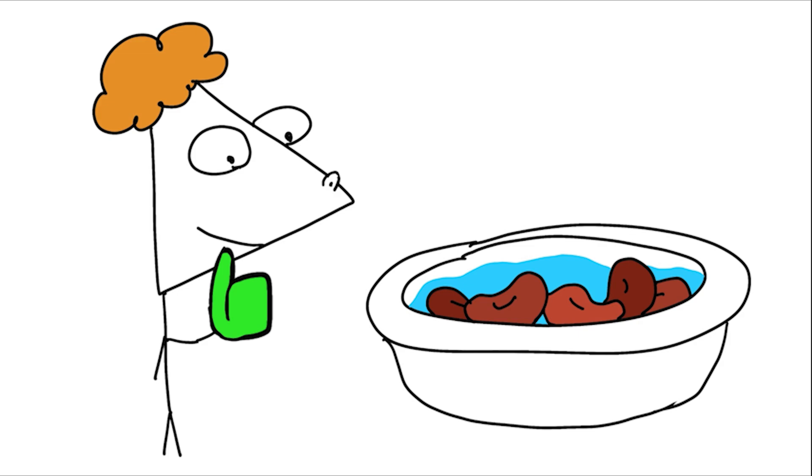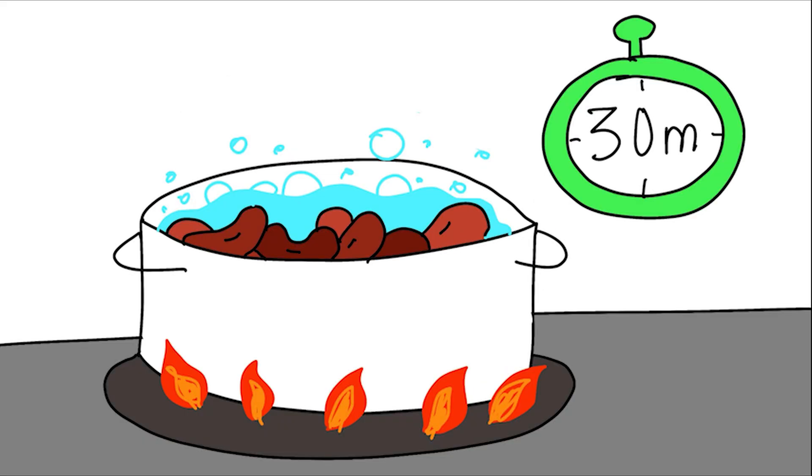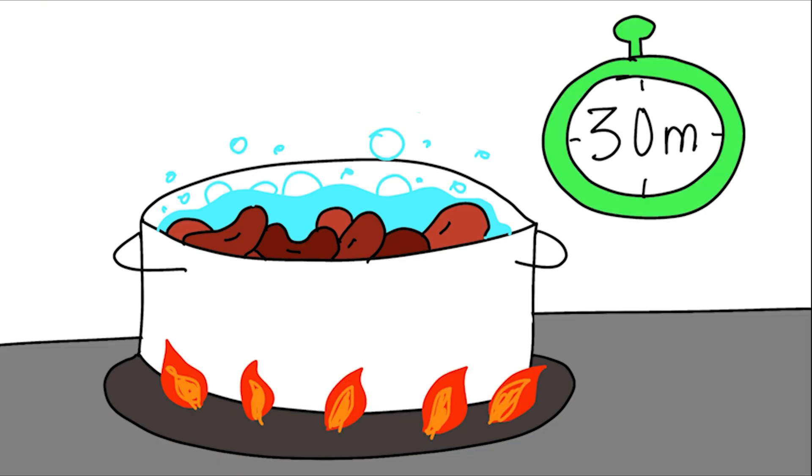Safe method: soak beans overnight in clean water. Discard the soaking water—it's loaded with toxin. Then boil vigorously in fresh water for at least 30 minutes. A gentle simmer won't neutralize the toxin. Only a rolling boil makes the beans safe.